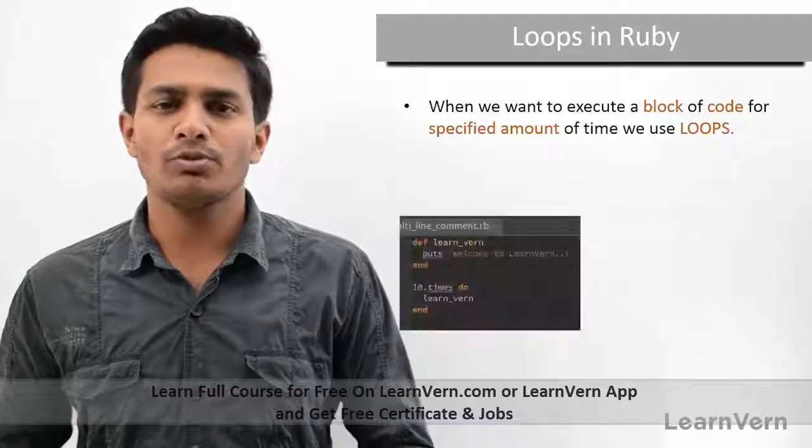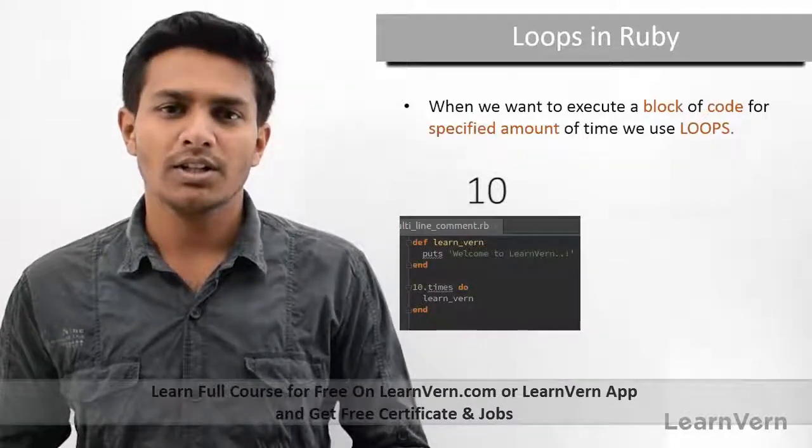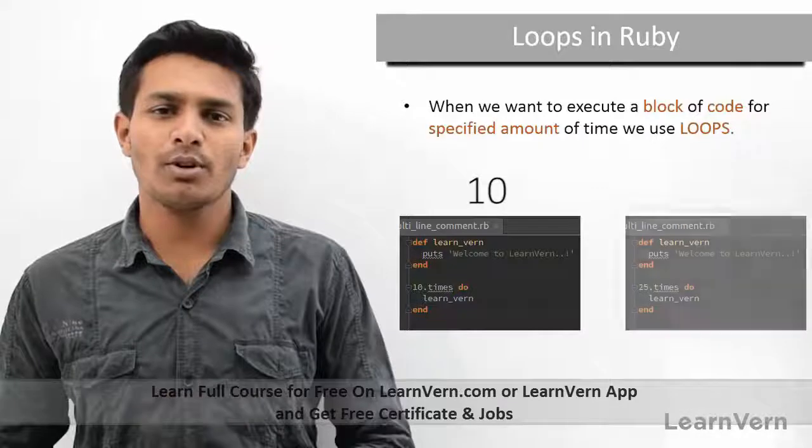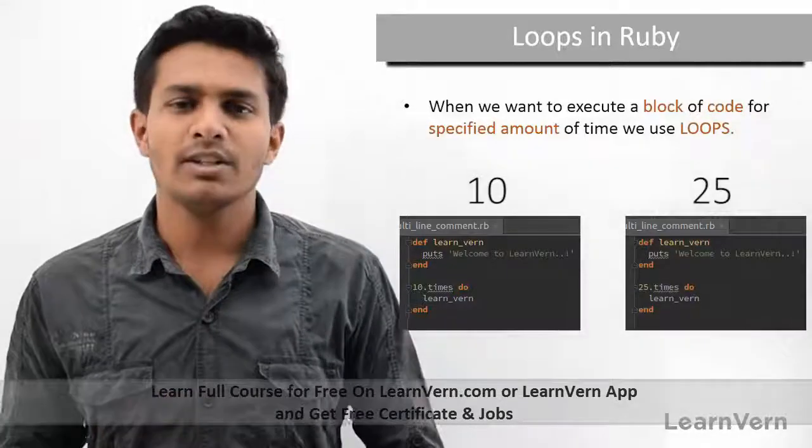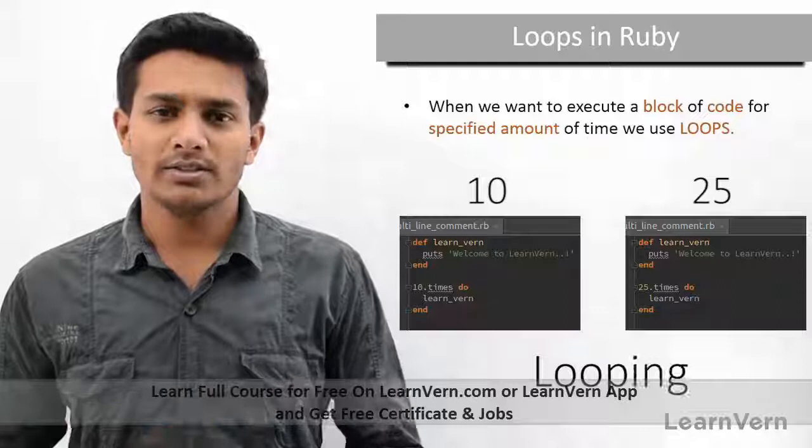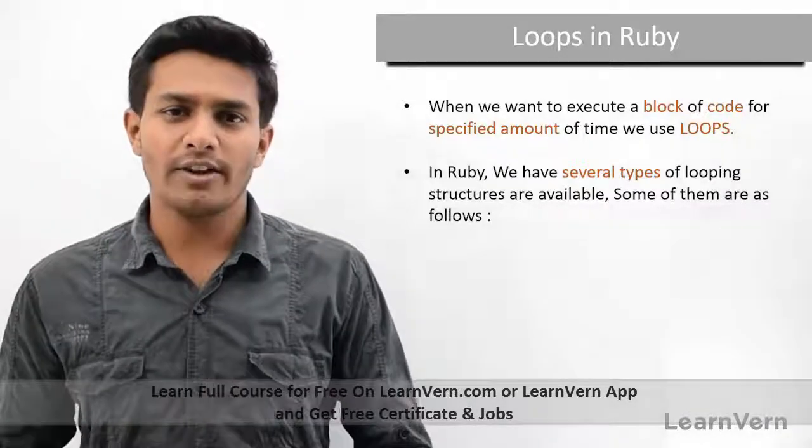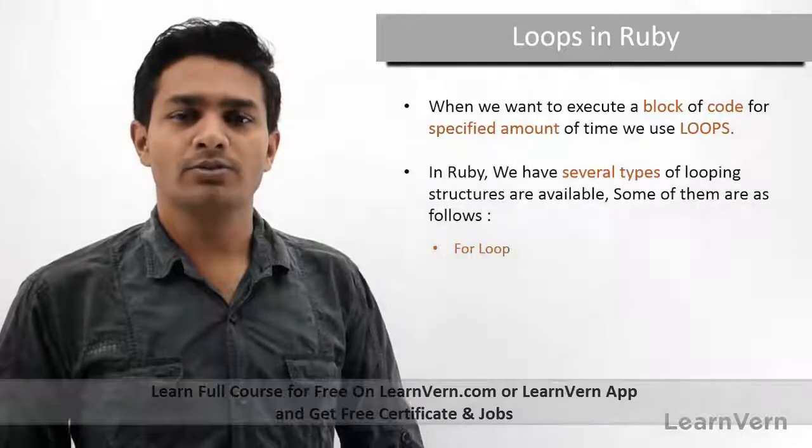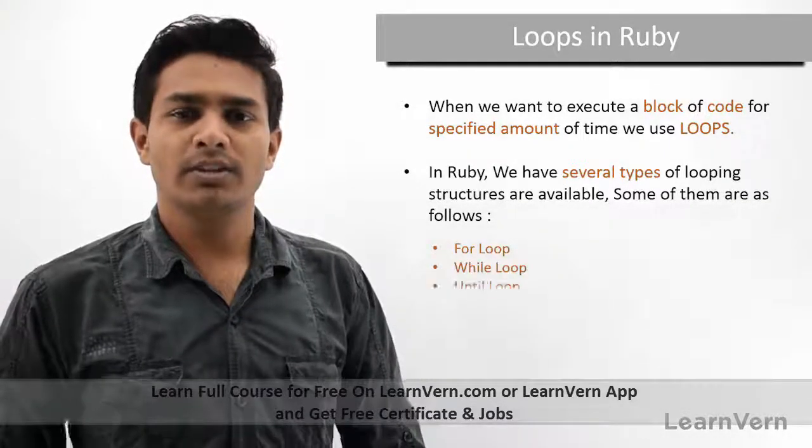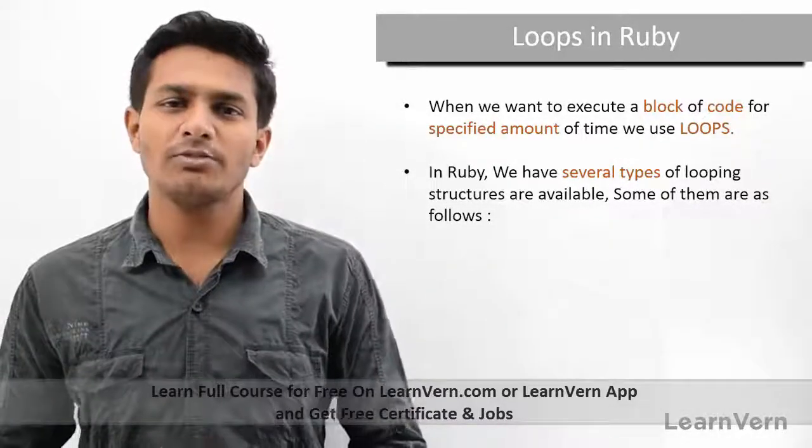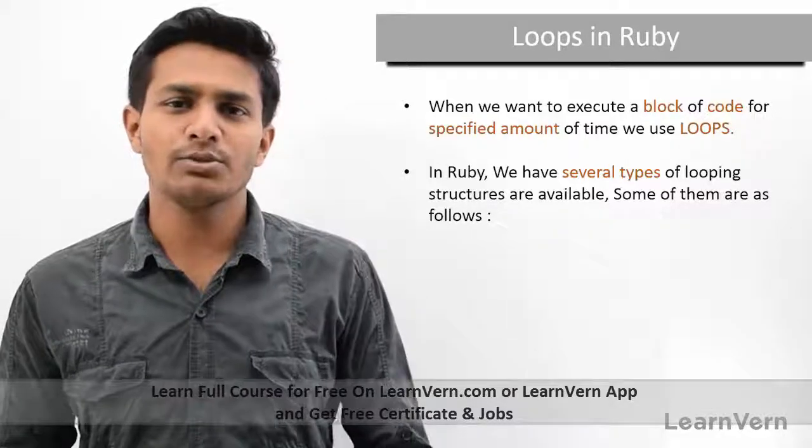For example, I want to execute my block of code 10 times, or 25 times. In this case I use looping. In Ruby we have several kinds of looping structures available, for example for loop, while loop, and until loop.